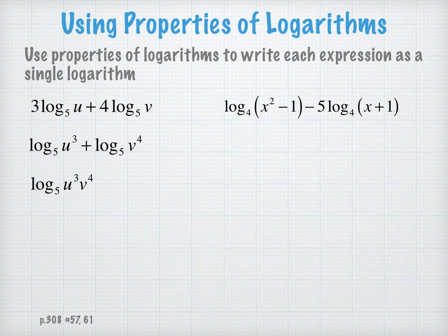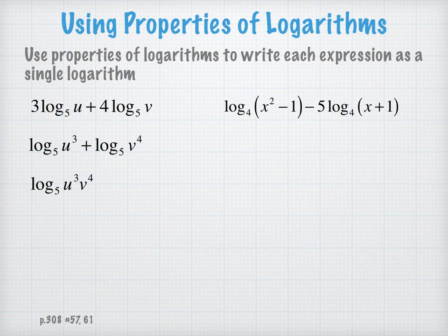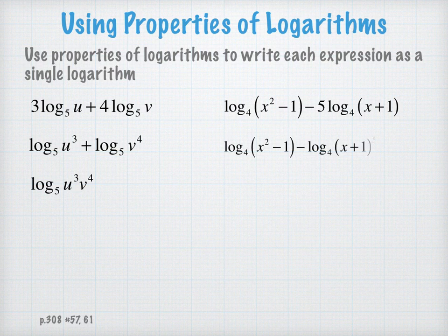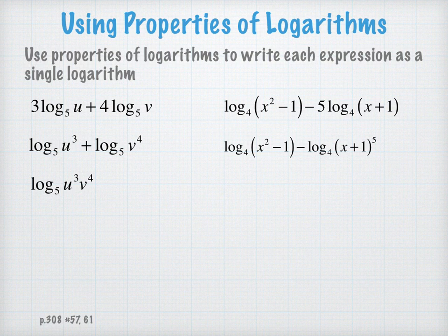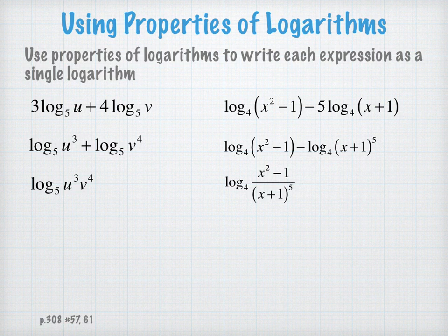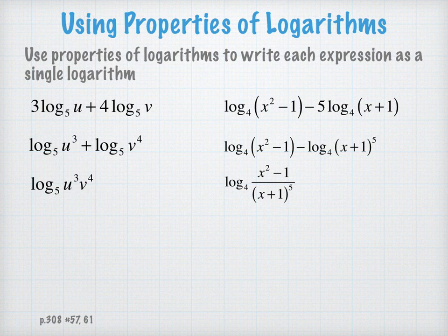In the next example, let's start by taking the 5 that is out in front of the log and bring it up as an exponent. Now let's consider representing this expression with a single log and a quotient. And we're going to notice here, before we assume our work is done, that the numerator can be factored into x minus 1 times x plus 1.